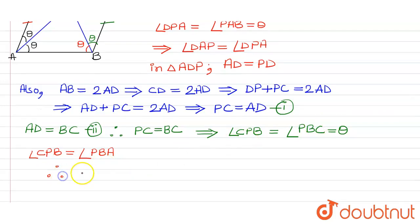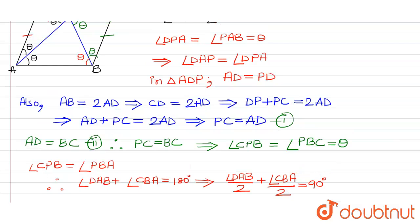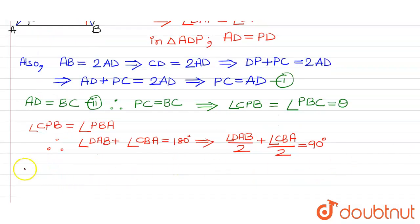So therefore, we have angle DAB plus angle CBA. This is equals to 180 degrees because they are the adjacent angles of a parallelogram. Suppose we divide this term by 2, then we get 90 degrees.